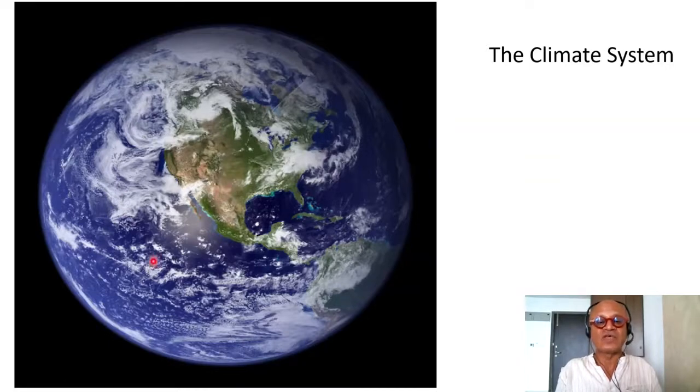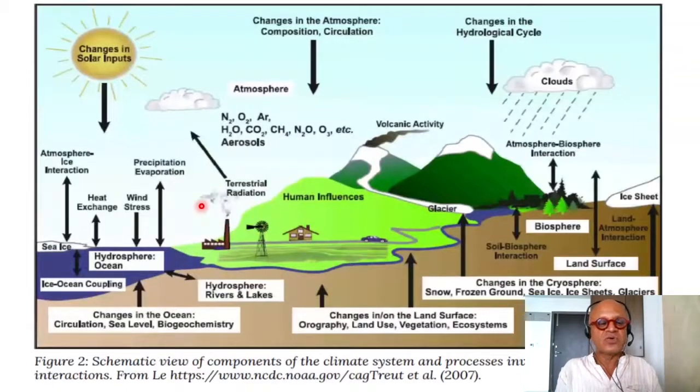And it turns out that the condensing air—actually condensing water—also releases the so-called condensation heat and so on and so forth. That's what gives us this climate system or the Earth system. So let's do the Earth system as well—a schematic view of the components of the climate system and processes involved.